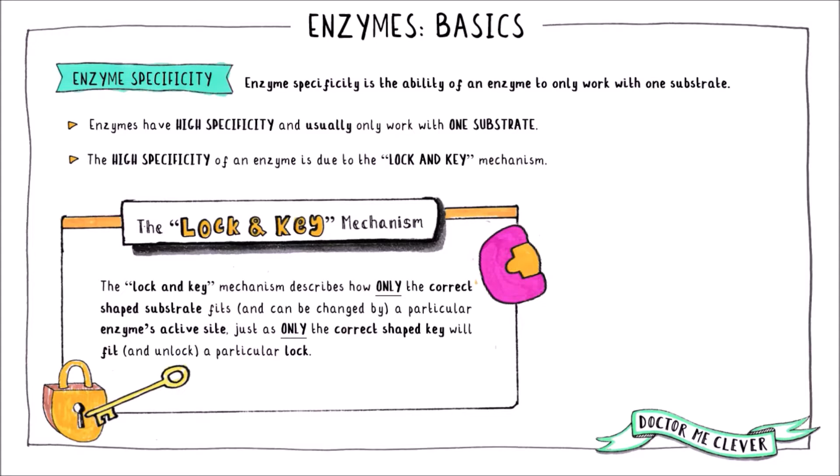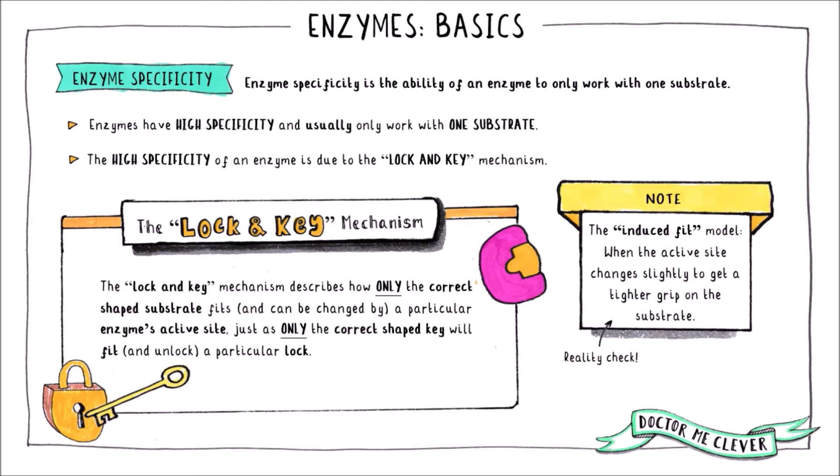The lock and key mechanism is a very simplified version of what actually happens. In reality, whilst the enzyme undergoes no permanent change during the reaction, it does change the shape of its active site slightly and momentarily so that it can get a tighter grip on its substrate. This is known as the induced fit model.